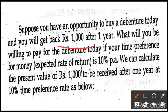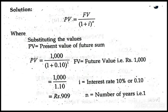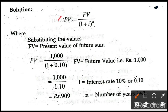After one year we are going to receive 1000 rupees at the rate of 10 percent. But today, how much are we going to receive? We don't know the present value. After one year we receive 1000 rupees, but how much do we receive today? That is what we are going to calculate. The formula is: PV equals future value divided by (1 plus r) to the power n.